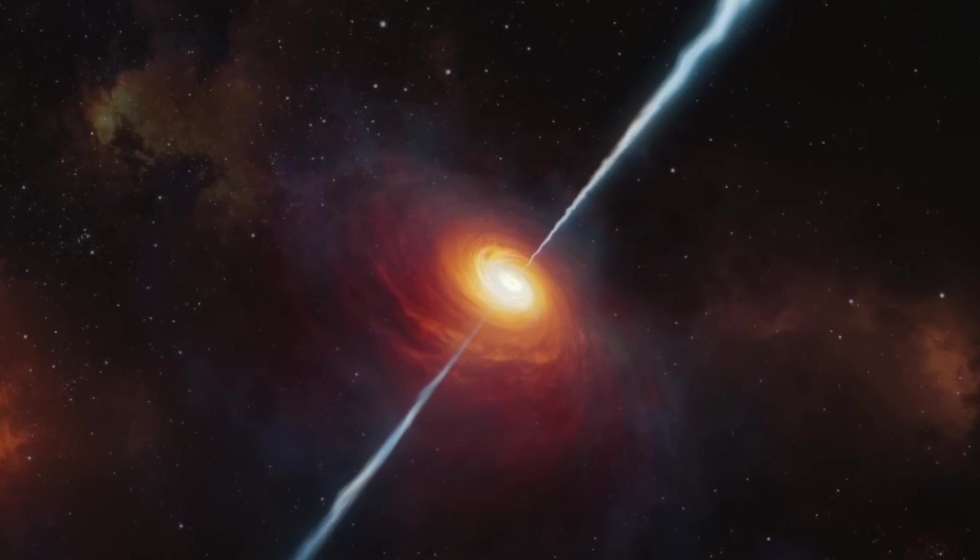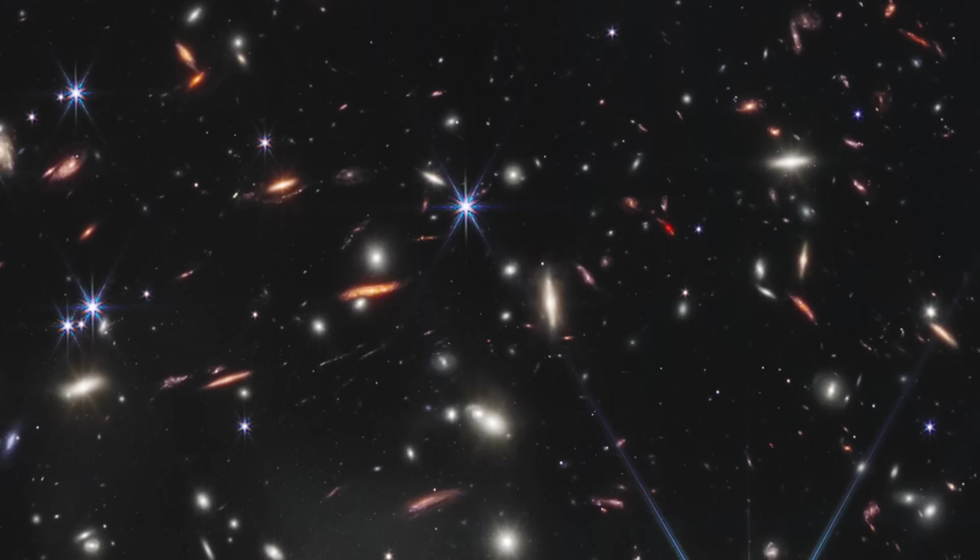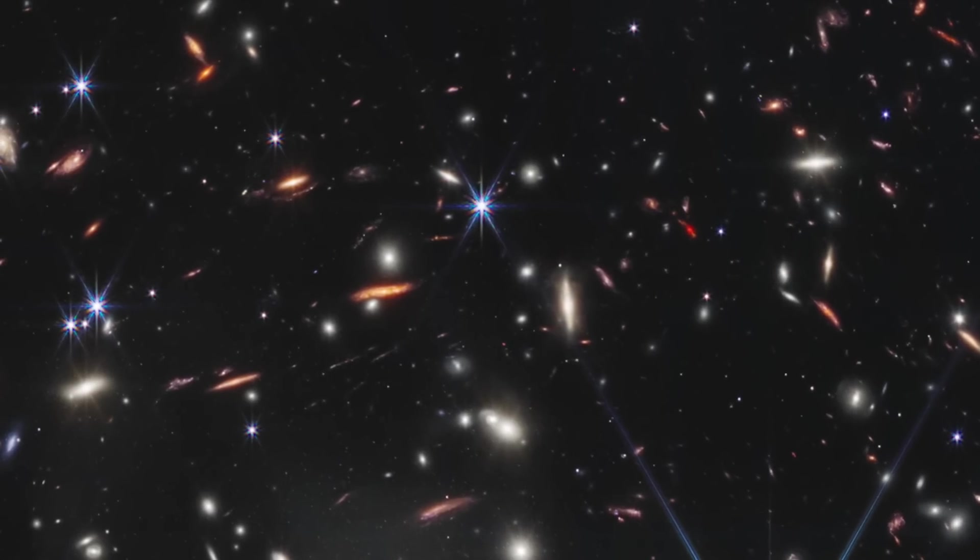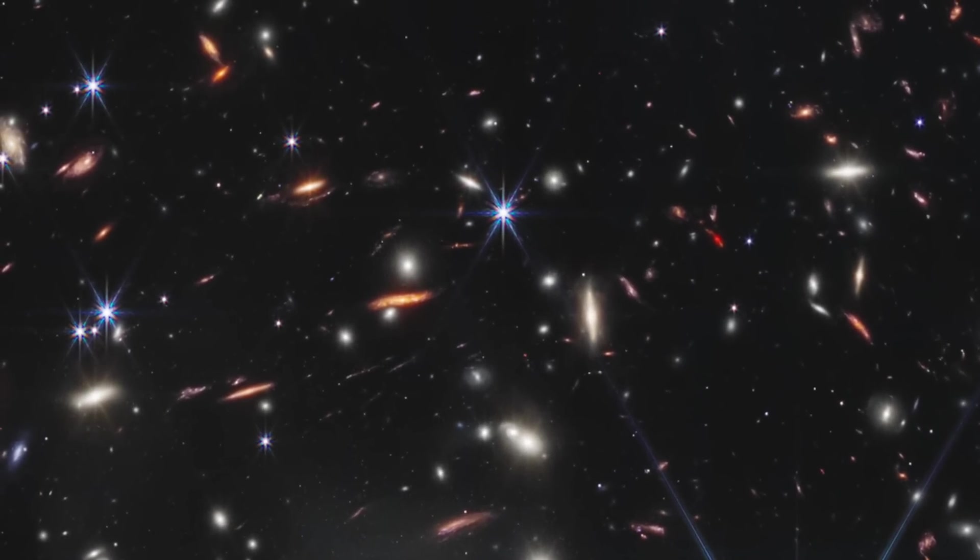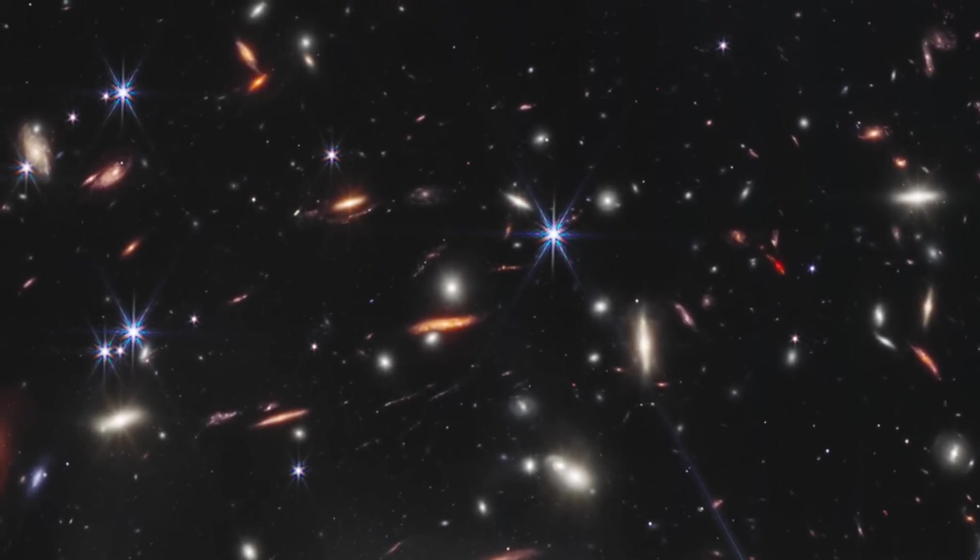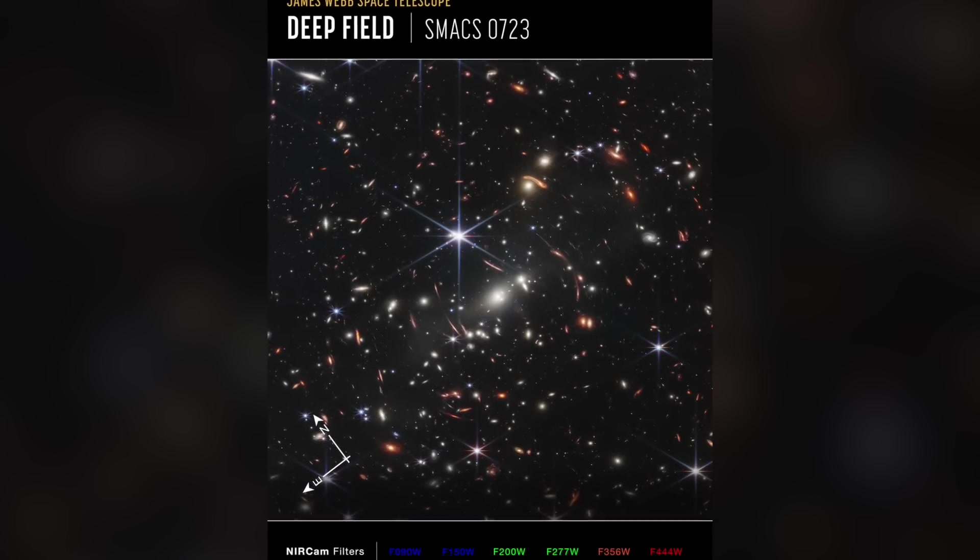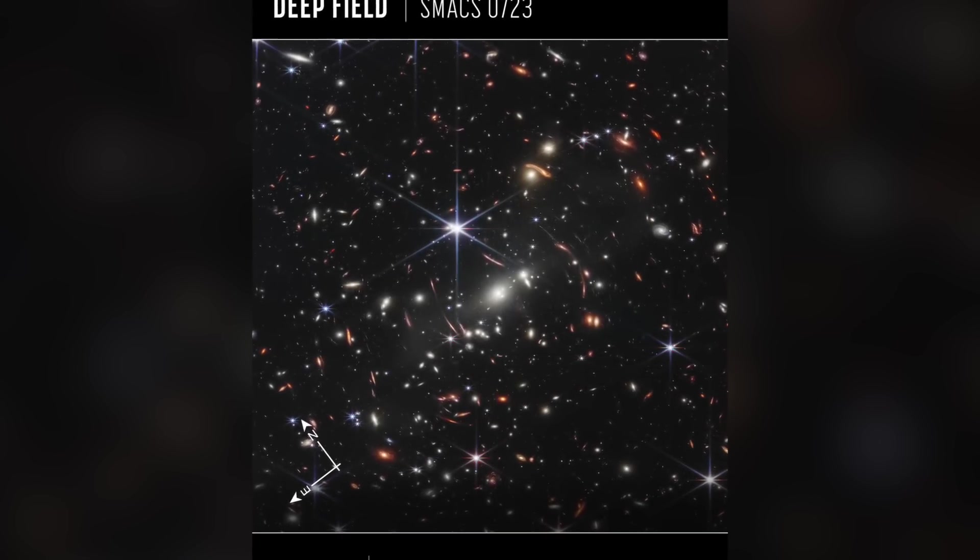The phenomena can only be understood in a balanced electric universe. It is impossible to overstate the significance of these facts, facts that are plain for anyone to see on the face of the image. In short, this one image, Webb's first deep field, falsifies the Big Bang.